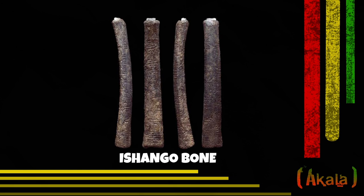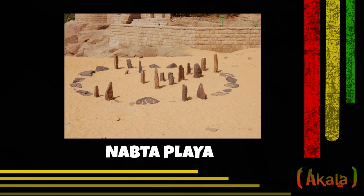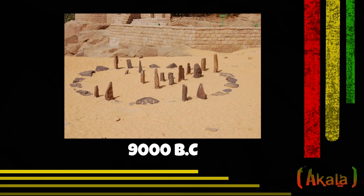One of the oldest mathematical instruments in human history is called the Ishango and Lebombo bones — these are some of the earliest instances of mathematical calculation in human history. One of the oldest astronomical observatories in human history is called the Nabta Playa, which is in the area between Egypt and Sudan today, dating from roughly about 9000 BC, though scholars debate on the issue.